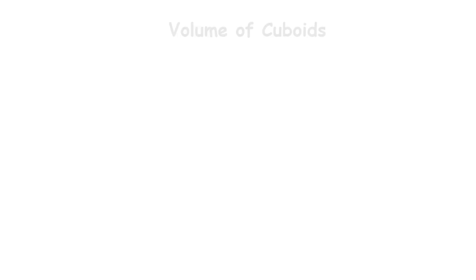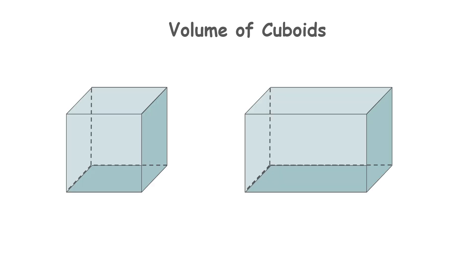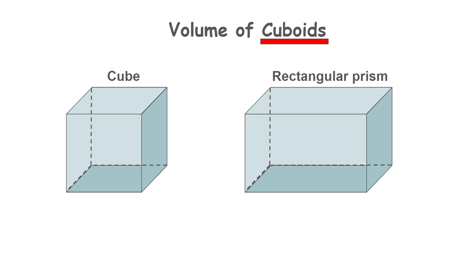In this video I'm going to show you how to calculate the volume of cuboids. Cuboids are three-dimensional cube-like shapes. The shape on the left is called a cube and the shape on the right is called a rectangular prism, and both shapes are classified as cuboids. Volume is the amount of physical space a three-dimensional object takes up. So how do we calculate the volume of a cuboid?